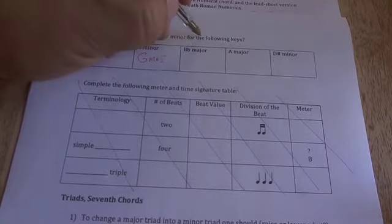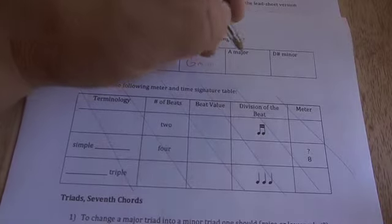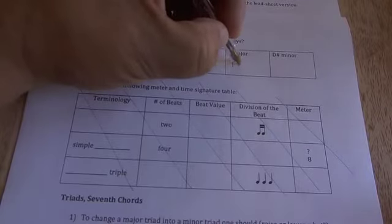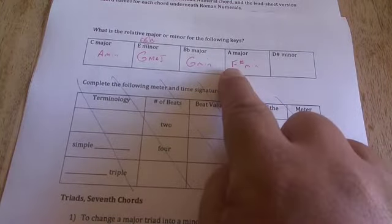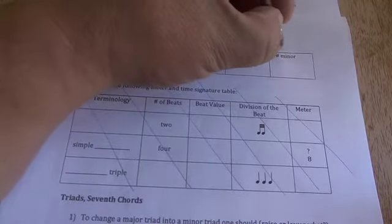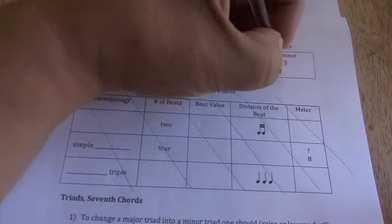B-flat major, go down two notes in the scale, will be G minor. A major, go down two notes in the scale, that will be F-sharp minor, because A has F-sharp, C-sharp, and G-sharp. So when you get down to the F it's going to be sharp. D-sharp minor, build yourself a D-sharp minor triad, and that's your relative major right there. It's going to be everything is sharp except for B.